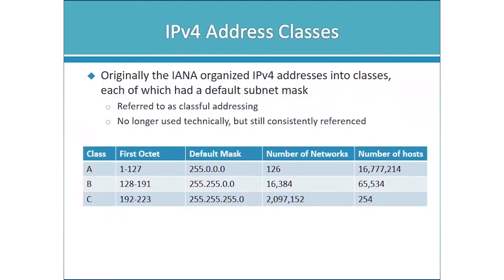Originally when IPv4 was introduced, the Internet Assigned Names and Numbers Association (IANA) organized IPv4 addresses into classes — the classful system. Each class had a default subnet mask. This system is no longer used because it was wasteful, and we've switched to classless routing, hence the CIDR syntax. However, the terminology is still referenced, so you need to understand it. When subnetting, we still say things like 'start with a Class C address and create subnets.'